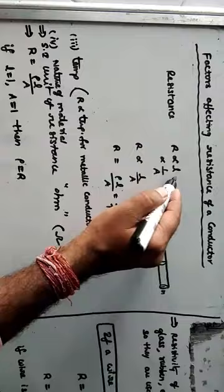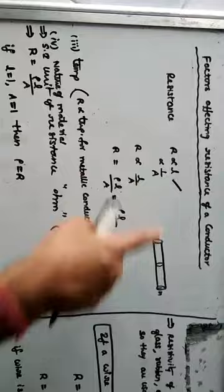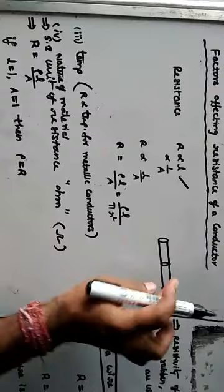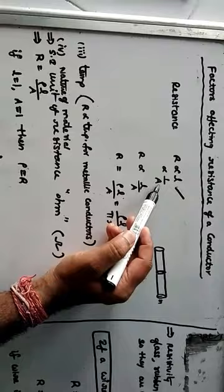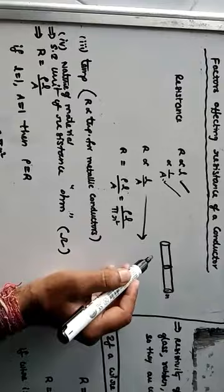Resistance of a conductor is directly proportional to the length of the conductor, and inversely proportional to the area of cross section. The cross section is like a circle. Combining these two: R is proportional to L by A. Remember this formula — I am going to use it for the numericals.